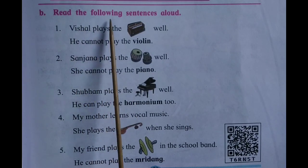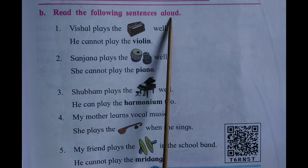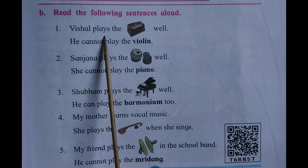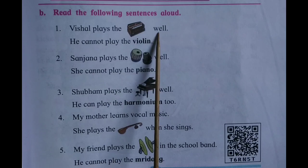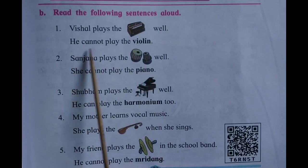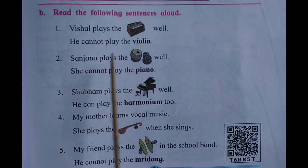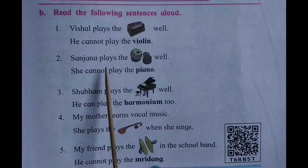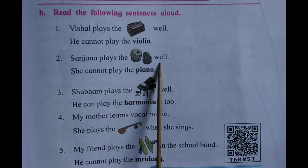Read the following sentences aloud. Vishal plays the harmonium well. He cannot play the violin. Sanjana plays the tabla dugga well.